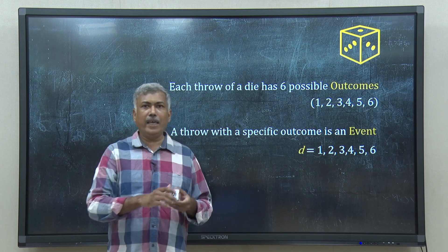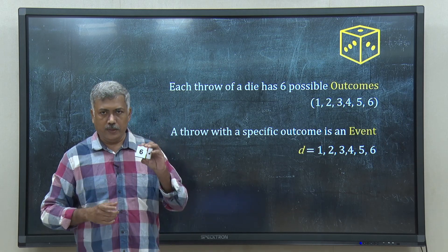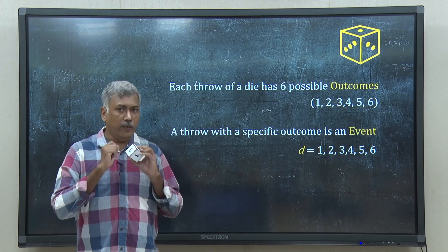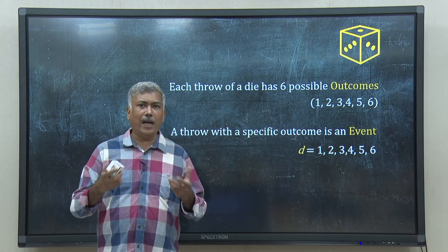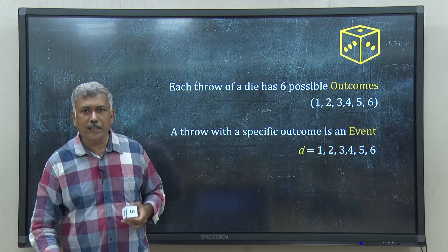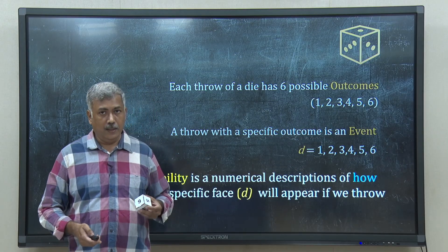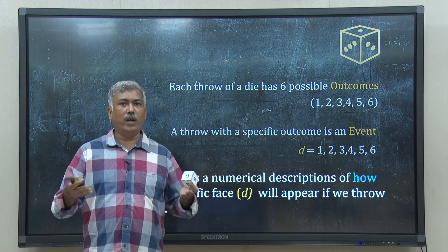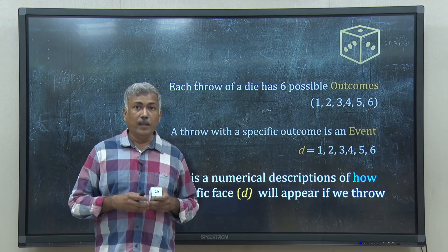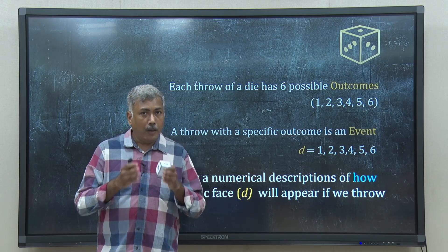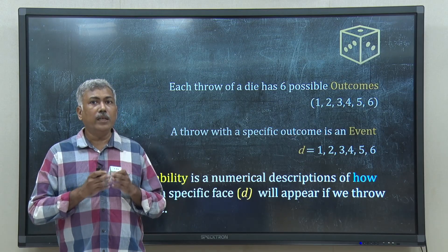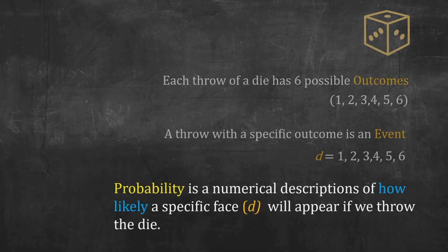If I throw it and I get suppose 6, that is one event. I can ask: what is the probability that if I throw this die, I will get a particular value — 6, 1, 2, or something like that? By probability, what we mean is a numerical description of the likelihood that a specific face of this die will appear when I throw it.